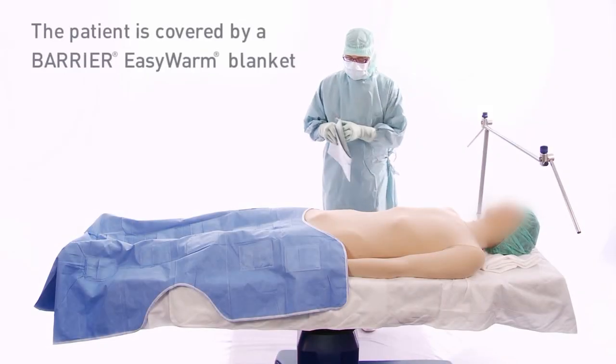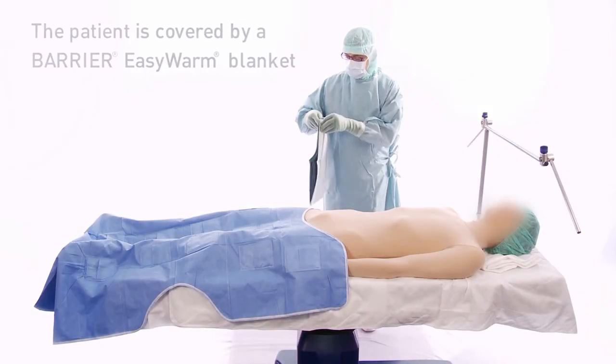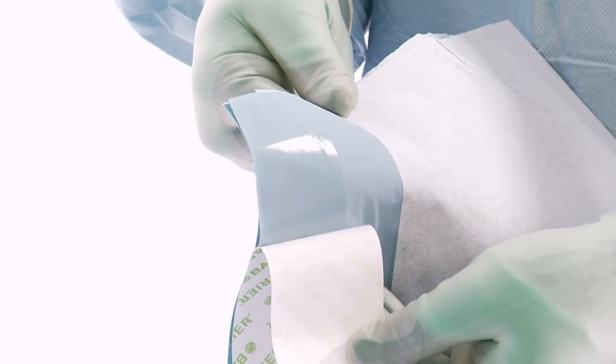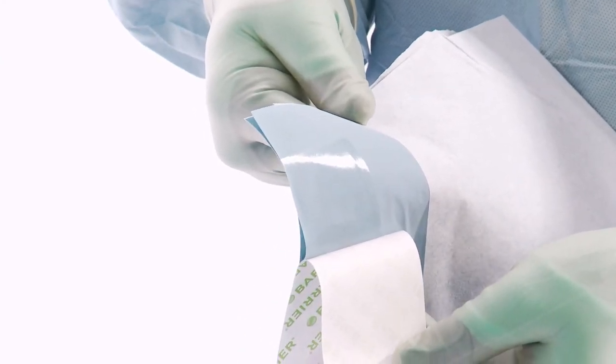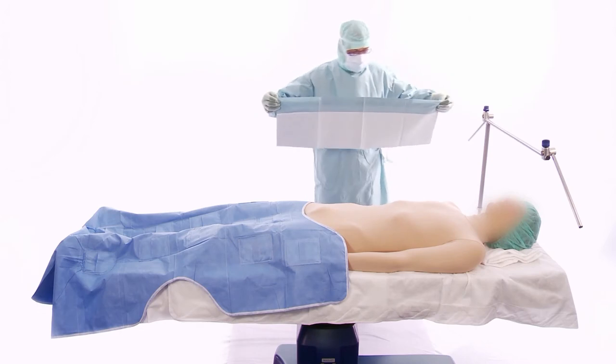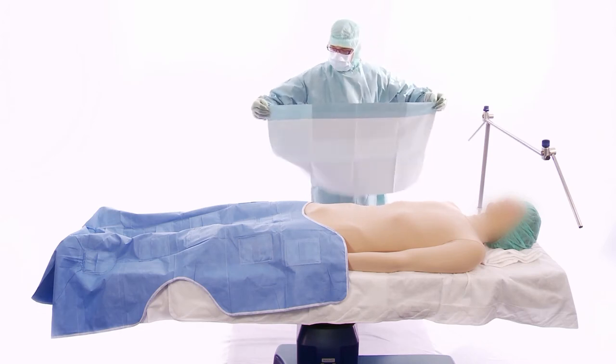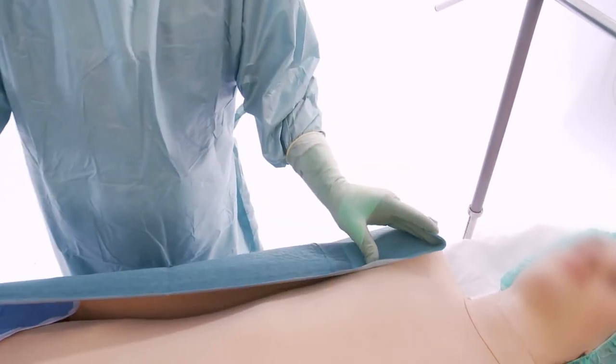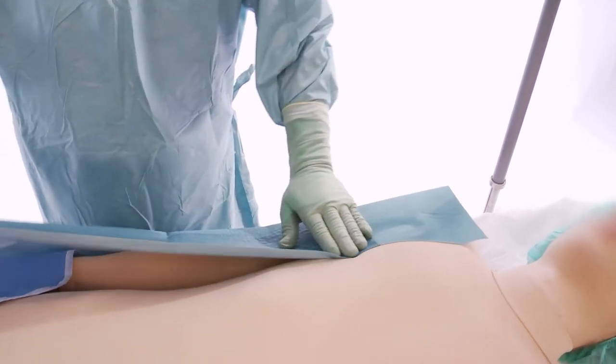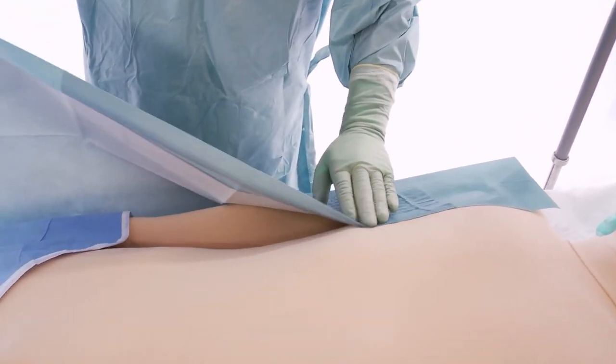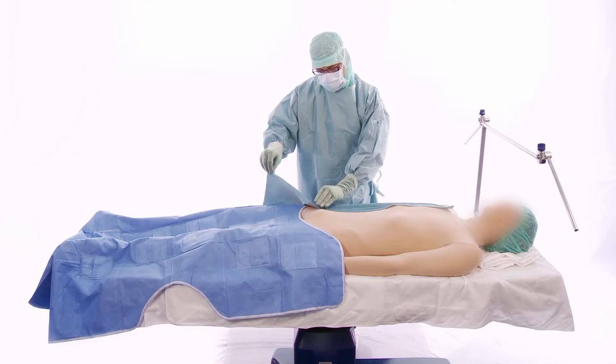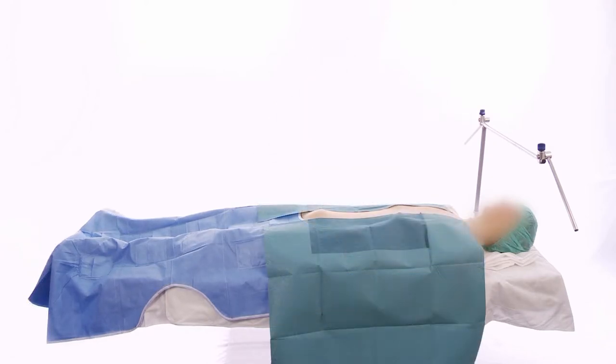Start by removing the release paper from the side towel. Note the finger lifts for easy handling. Unfold the towel and hold it firmly. Start at one end and apply it gently to the lateral side of the patient. Do the same on the other side.